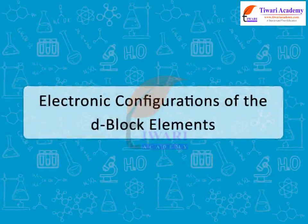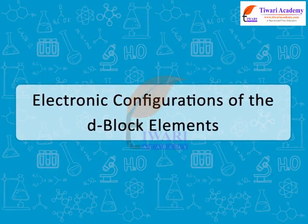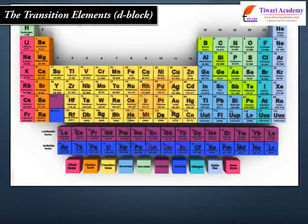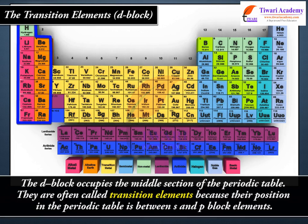Electronic Configurations of the D-Block Elements. The D-Block occupies the middle section of the periodic table. These elements are often called transition elements because their position in the periodic table is between the S and P-Block elements.